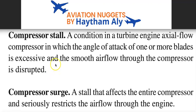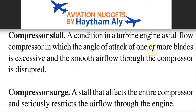Now you can clearly identify the difference between these two problems. Compressor stall is a local problem, but compressor surge is a general problem. When the entire compressor stalls, that is compressor surge. But if only one stage or two stages — a certain number of blades — are affected, it is still a compressor stall, which is a local problem.